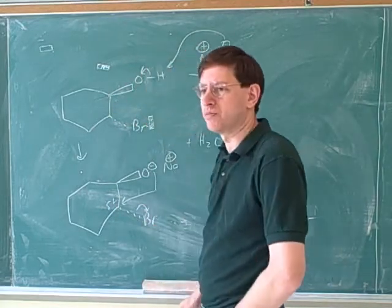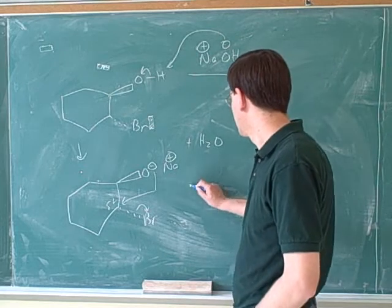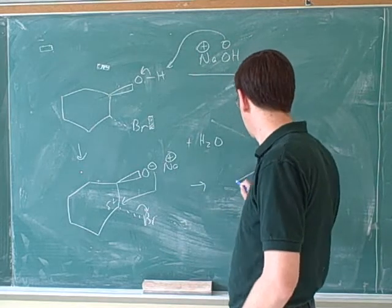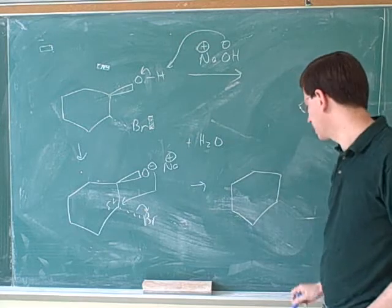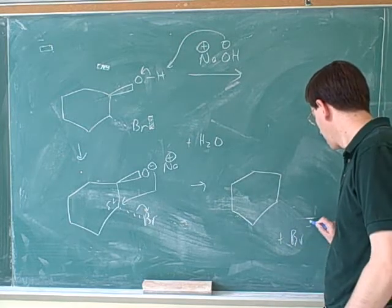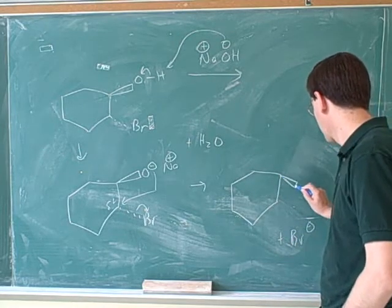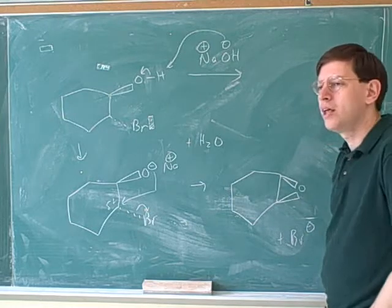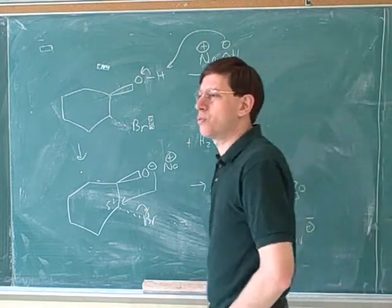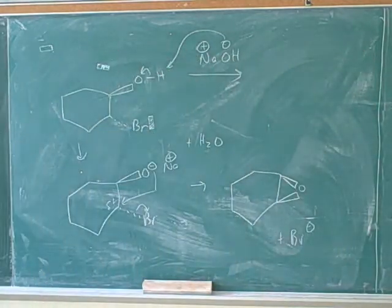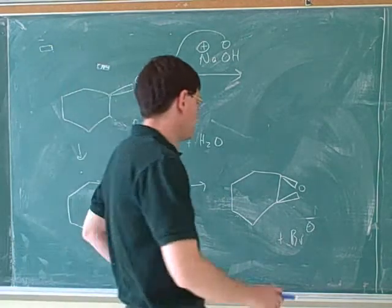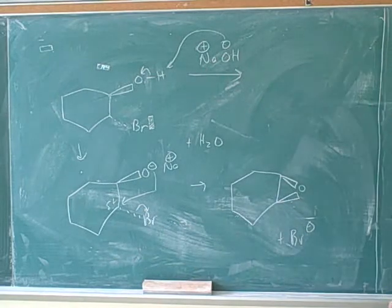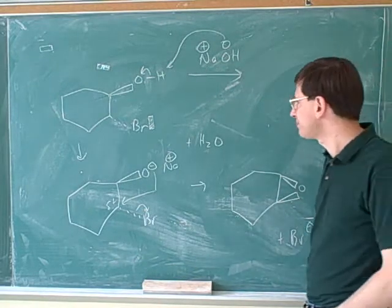And then the bromine has to leave to make room. We've done this before. And then what's the product going to look like? An oxycyclopropane — a double-bonded ring thing. So this is another way to make oxycyclopropanes. Now we have two ways to make oxycyclopropanes that we need to have in our tool kit. So this is our second way to make oxycyclopropanes.